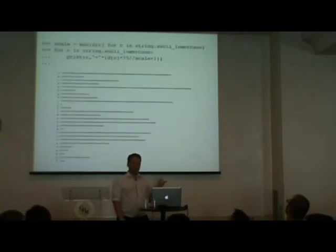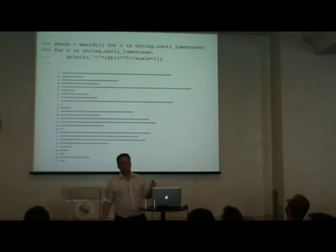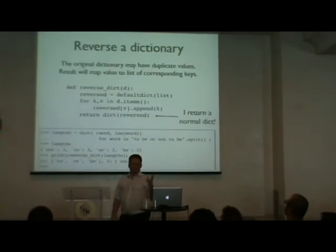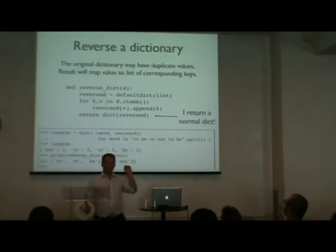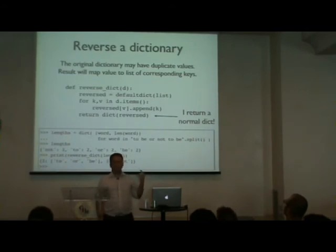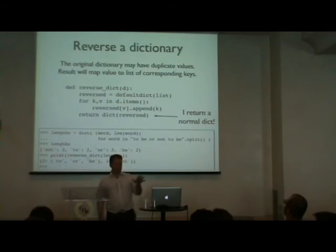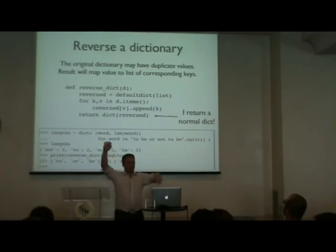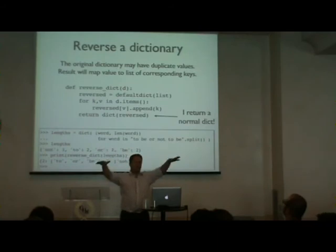Using defaultdict(int) I count all the letters across all the words in my dictionary. Just go through, process all the words, process all the characters in lowercase, and increment the count. No special handling needed for first occurrence. The result: J is the least commonly used letter in my dictionary. I expected Q, so I was surprised that J was least common.